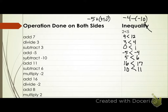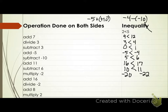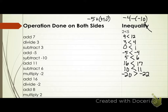Multiply by negative two. Ten times negative two? Negative twenty. Eleven times negative two? Negative twenty-two. Inequality symbol — greater than or less than? Raise your hand if you say greater than. It's greater than. Negative twenty is greater than negative twenty-two. The symbol changed — it flipped!